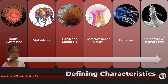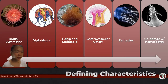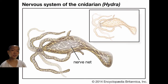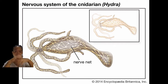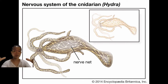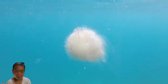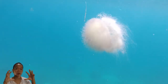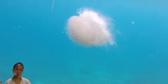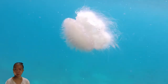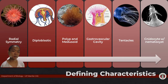What is the advantage of having radial symmetry? The fact that you do not have a front or a back. The cnidarian nervous system doesn't have a centralized brain. Instead, you have a mesh or network of nerve fibers distributed across the entire body of the organism. Living in water, predator or prey can come from any direction — 360 degrees.